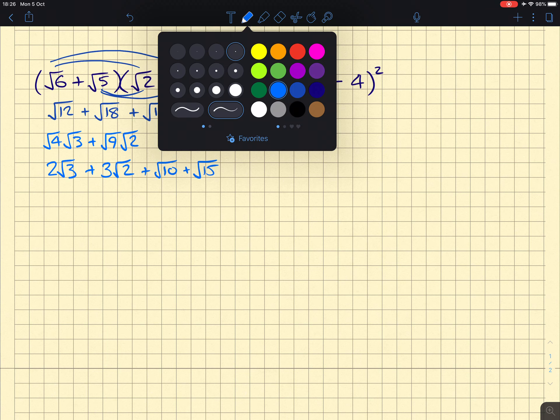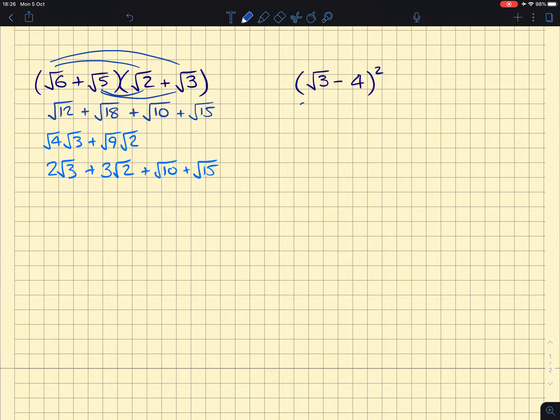Lastly, when we've got a bracket being squared, it's the same as that bracket multiplying itself. So we can write this out. There is also a shortcut, but I won't mention that in this video. So root 3 times root 3 will give us root 9, or in other words, 3. Root 3 times a negative 4 gives us a minus 4 root 3. Minus 4 times root 3 gives us another minus 4 root 3.